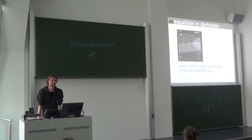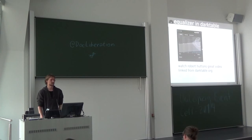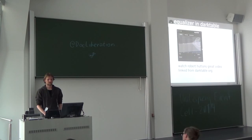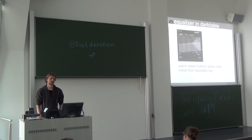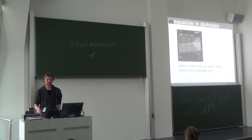There's also the equalizer module — I won't go into detail here because there's a great video by Robert Hutton linked from our webpage. With knowledge of what the wavelets look like in the background, you can do quite cool things. This is the local contrast curve — you crank up detail a little bit — and down here is the wavelet shrinkage threshold, which removes noise. If you push that noise floor up, it denoises more. You can just choose whatever works best for your image.